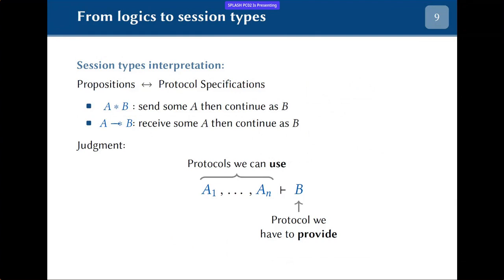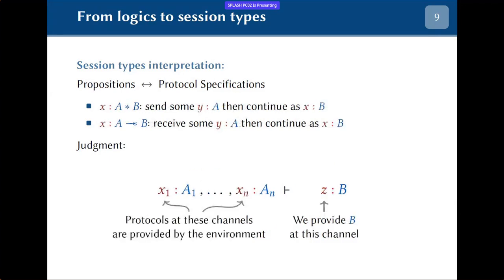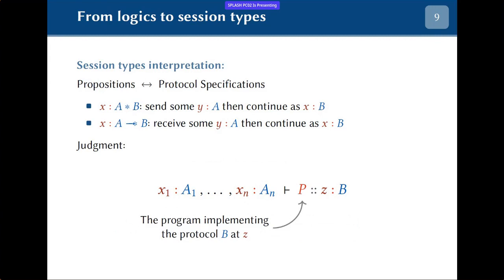Since protocols don't just happen in the void — they happen at some channel — we will decorate every proposition with a channel name, the channel at which the protocol is happening. The only thing missing now is the program: we converted a judgment from logic to a typing judgment, and the program is the concurrent program implementing protocol B at channel Z while using the channels provided as hypotheses.